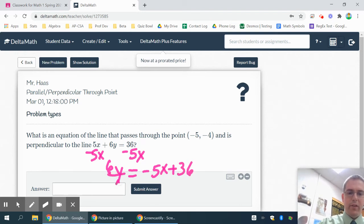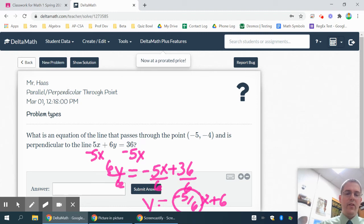6y equals negative 5x plus 36. And then to solve for y, divide everything by 6. So my equation is y equals negative 5/6x plus 6. Now once you have made it this far with negative 5/6x plus 6, there's my negative 5/6, which is my slope.